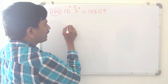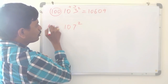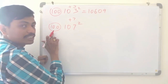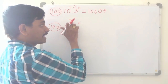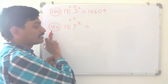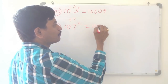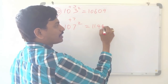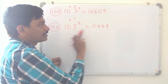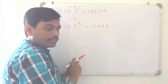Next, I will take another number: 107 squared, which is nearer to 100. 107 is how much bigger than 100? Plus 7. Always add to the number itself when nearer to 100. So 107 plus 7 is 114. And 7 squared is 49. So 107 squared is 11,449.